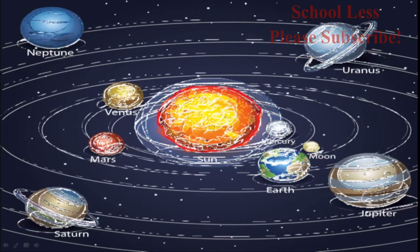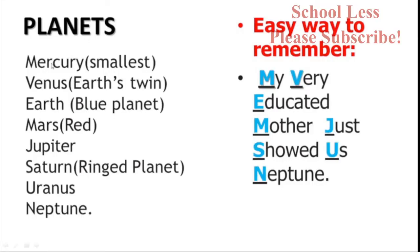Saturn has spectacular rings, so Saturn is a ringed planet. Mercury is the smallest planet. Venus is Earth's twin. Earth is the blue planet. Mars is the red planet. Jupiter is the largest planet. Saturn is the ringed planet. Uranus and Neptune are the frozen planets.